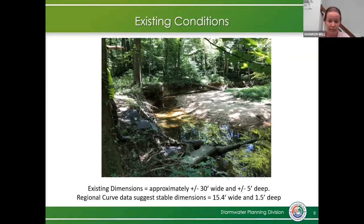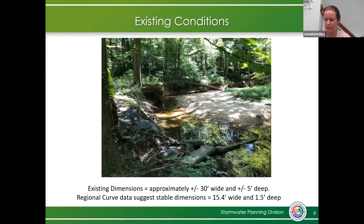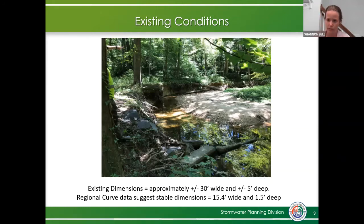Based on regional curve data, streams with this project's drainage area should be about 15 feet wide and 1.5 feet deep. So this stream is larger than what it needs to be. Regional curve data is developed by looking at dimensions from stable streams in the region — what we call reference reaches — and they're used to size stream channels appropriately based on drainage area using natural channel design methods, which are restoration methods that emulate natural streams.